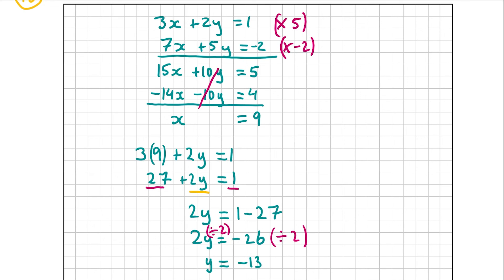But I don't want 2y equal to a number, I just want 1y equal to whatever the number is. So to get rid of the 2 before the y, I'm going to divide both sides by 2. 2y divided by 2 will just give me 1y, and minus 26 divided by 2 is going to be minus 13. So therefore, y is equal to minus 13. You're just dividing both sides by whatever the number is before the y. So there we have it: x is equal to 9 and y is equal to minus 13. That's my answer for part c, the final part of the question. Thank you very much for watching and I hope I helped.